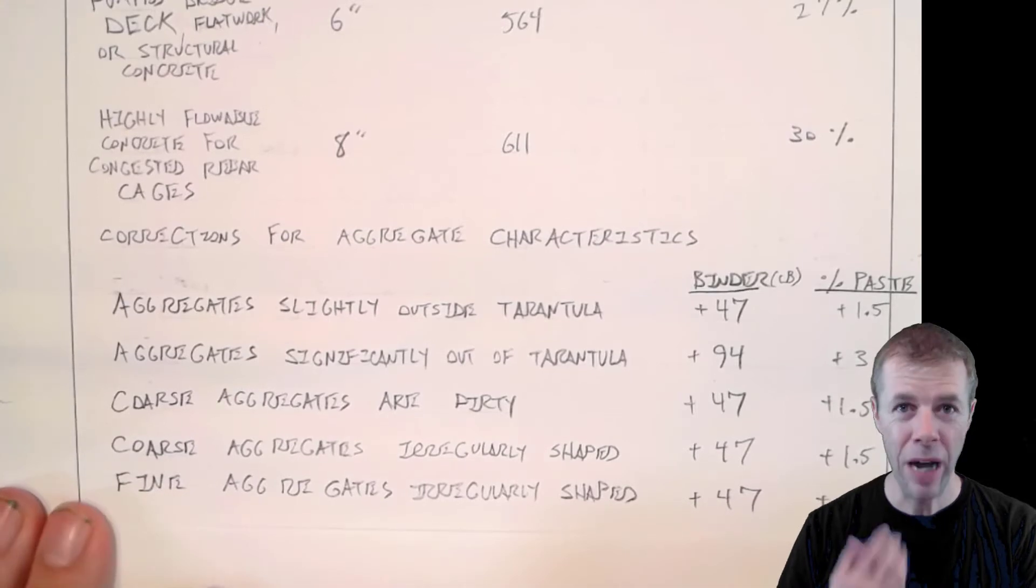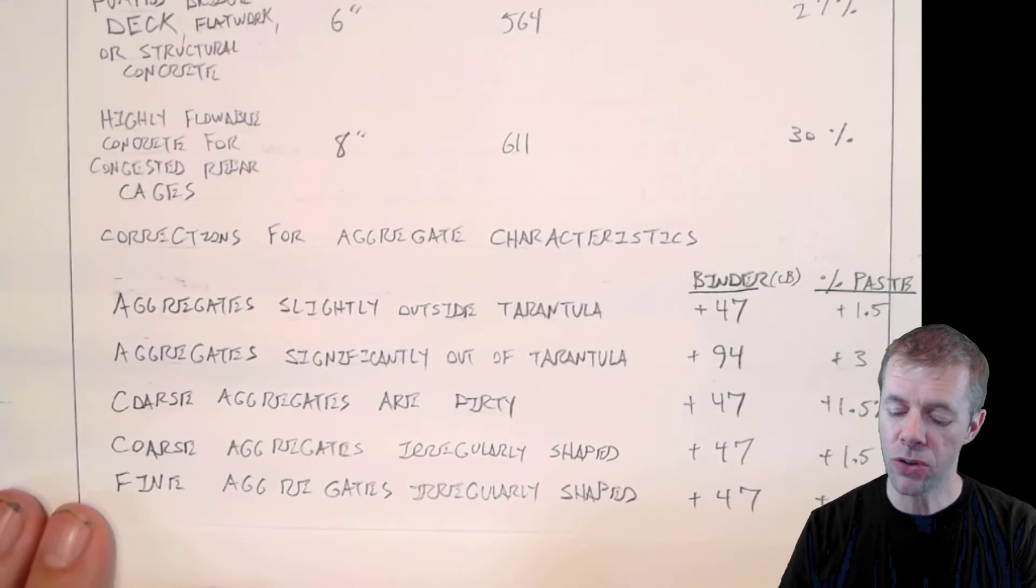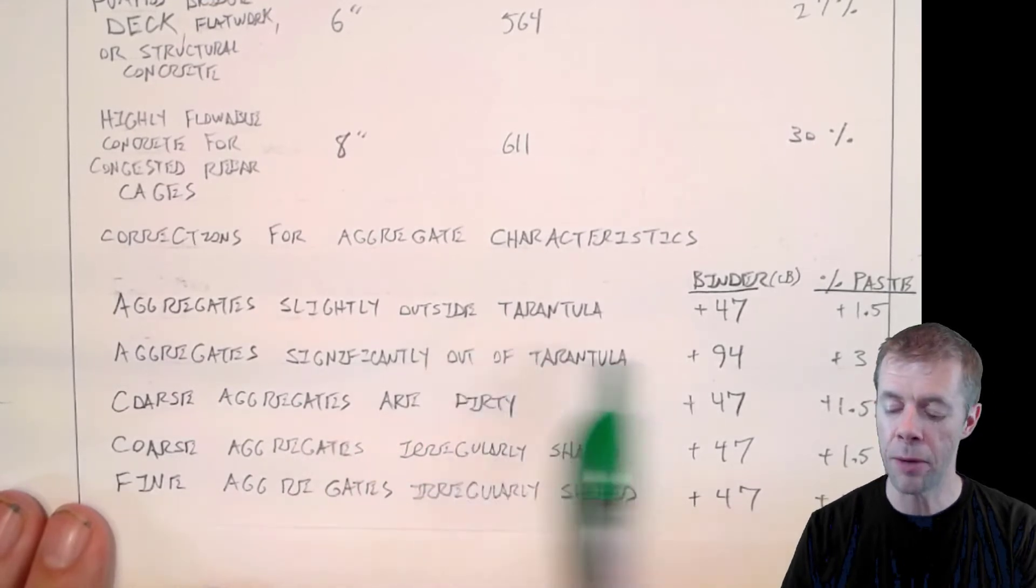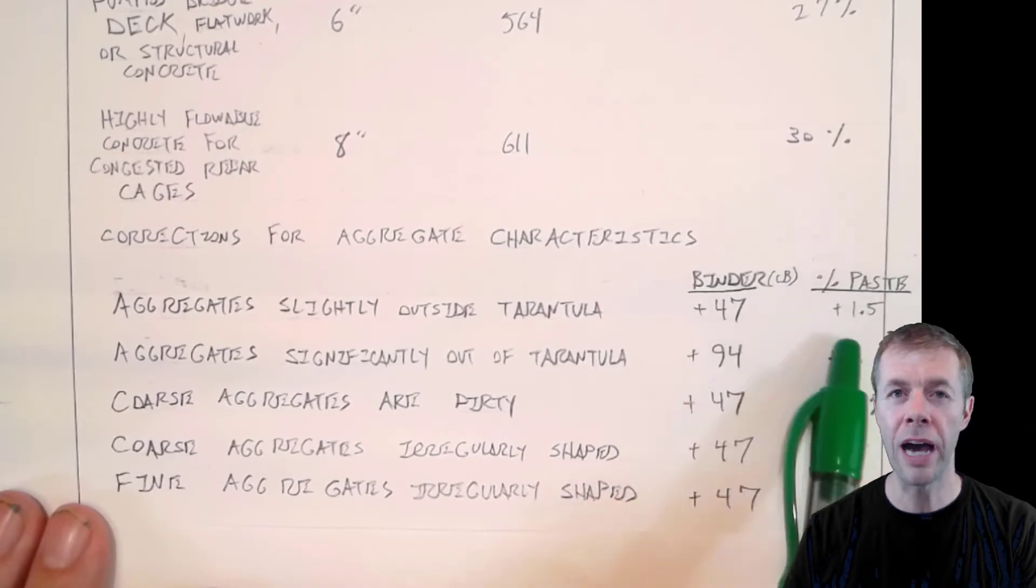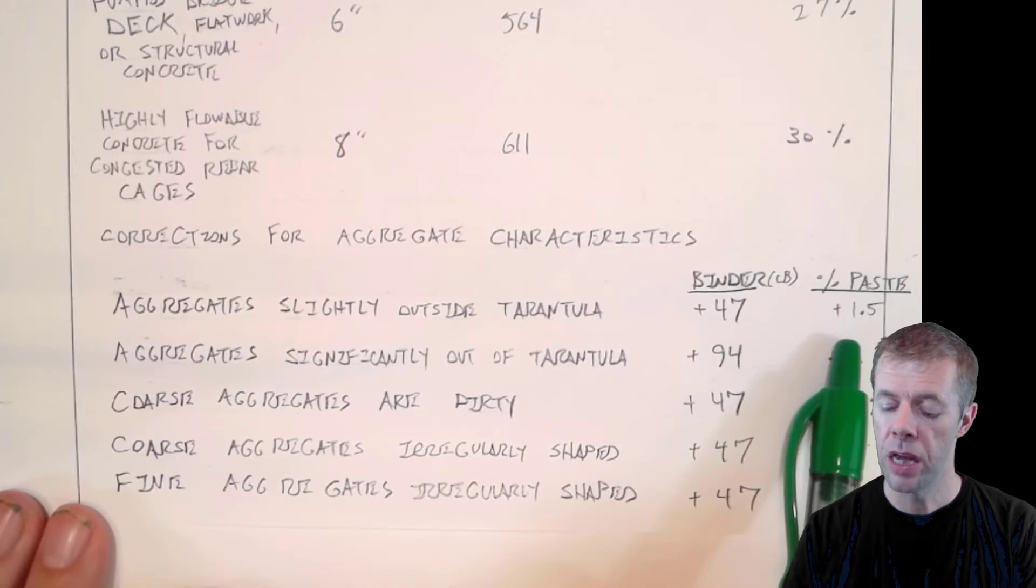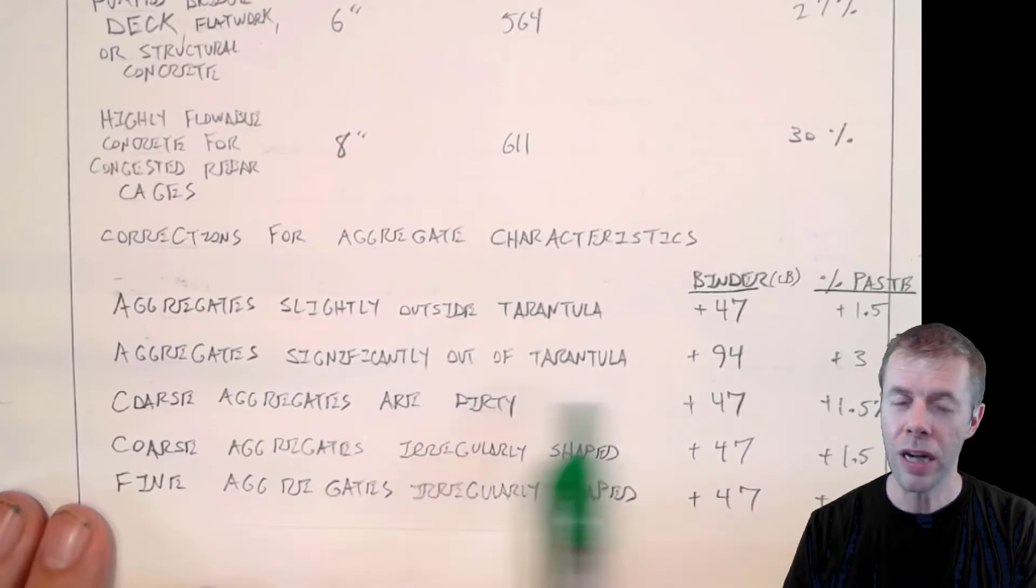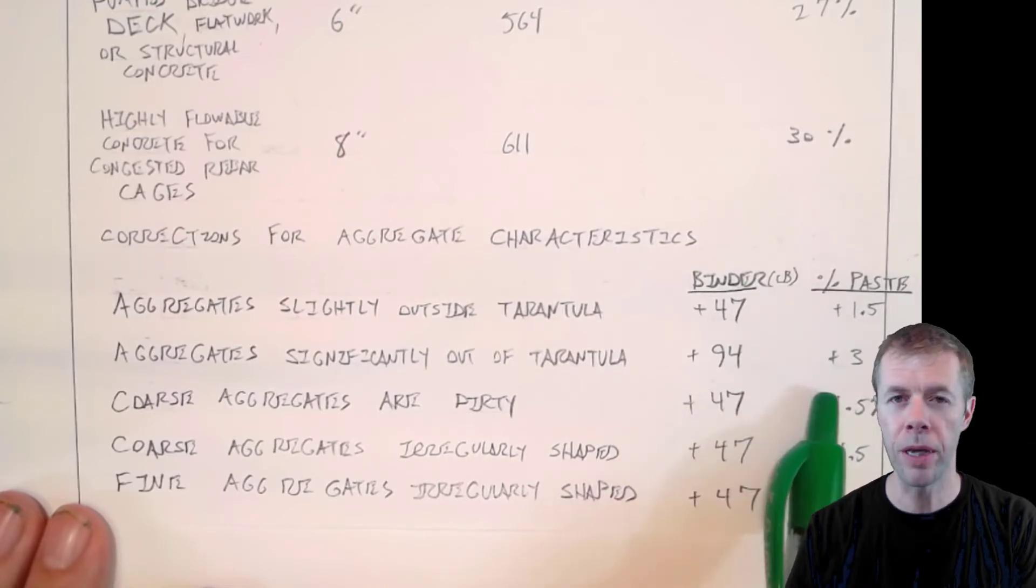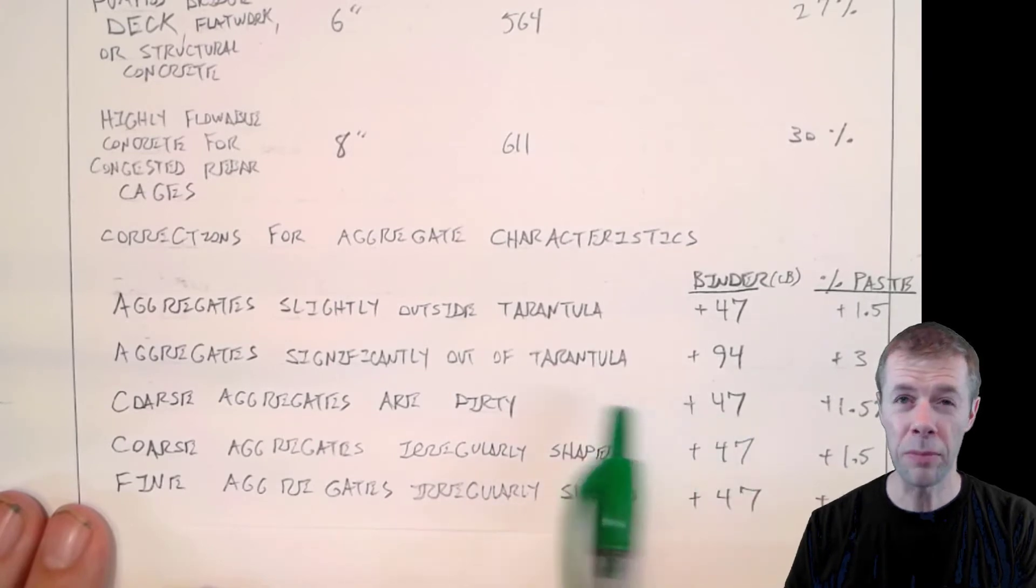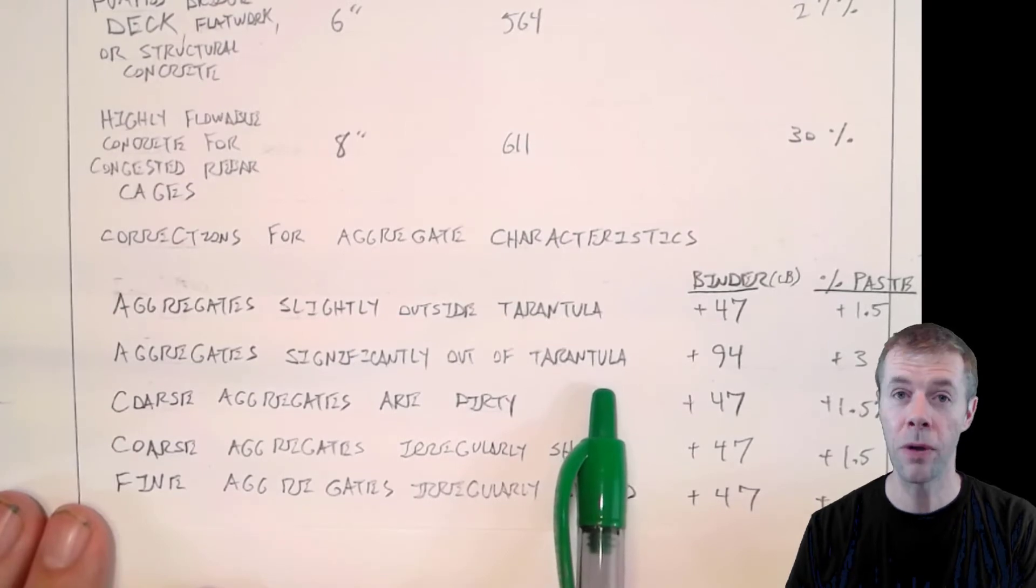For example, if our aggregates are slightly outside the Tarantula Curve, you're going to add about half a sack, about 47 pounds of binder to that mixture. That's about one and a half percent of the paste. If your aggregates are significantly out of the Tarantula, what does that mean? We'll talk about that in a second. You're going to add a full sack of cement or binder to the concrete, or that's about a three percent paste content. Now, there are some times that you're so far outside the Tarantula that adding more paste doesn't help you, that you're just in trouble. We'll talk about that too.